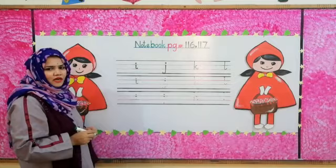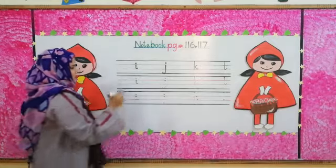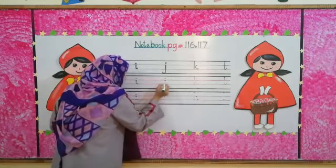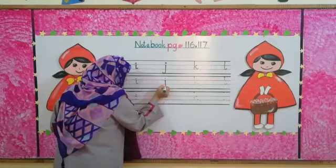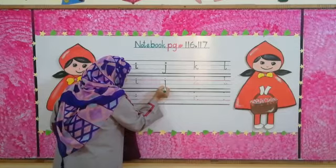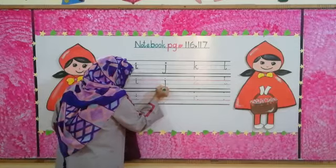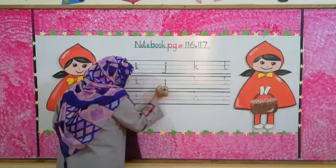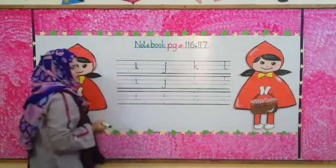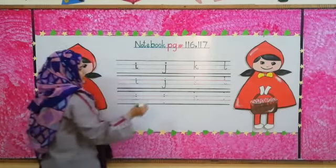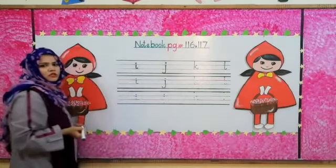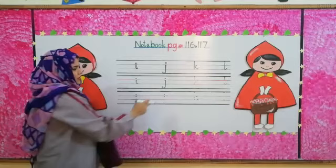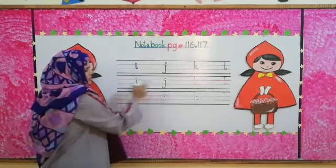What comes after I? J. First come down, then do a stroke, then go up and stroke. We will put a dot on the top. This is letter J.